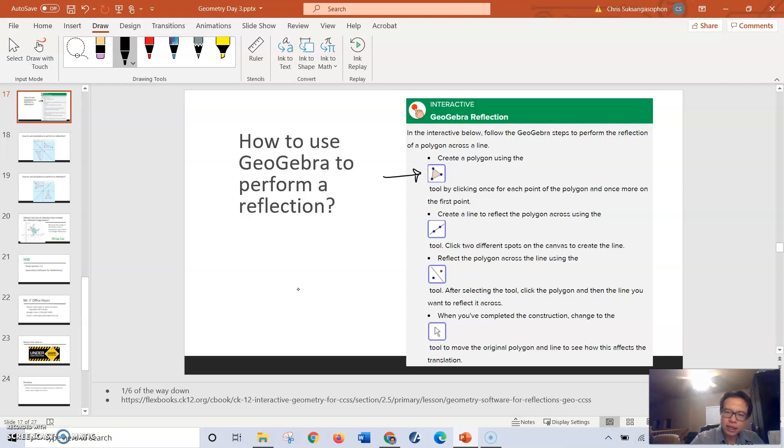Then we're going to next use the line tool here. This will create a line of reflection next to your polygon in which you're going to reflect the pre-image across the line to create an image.